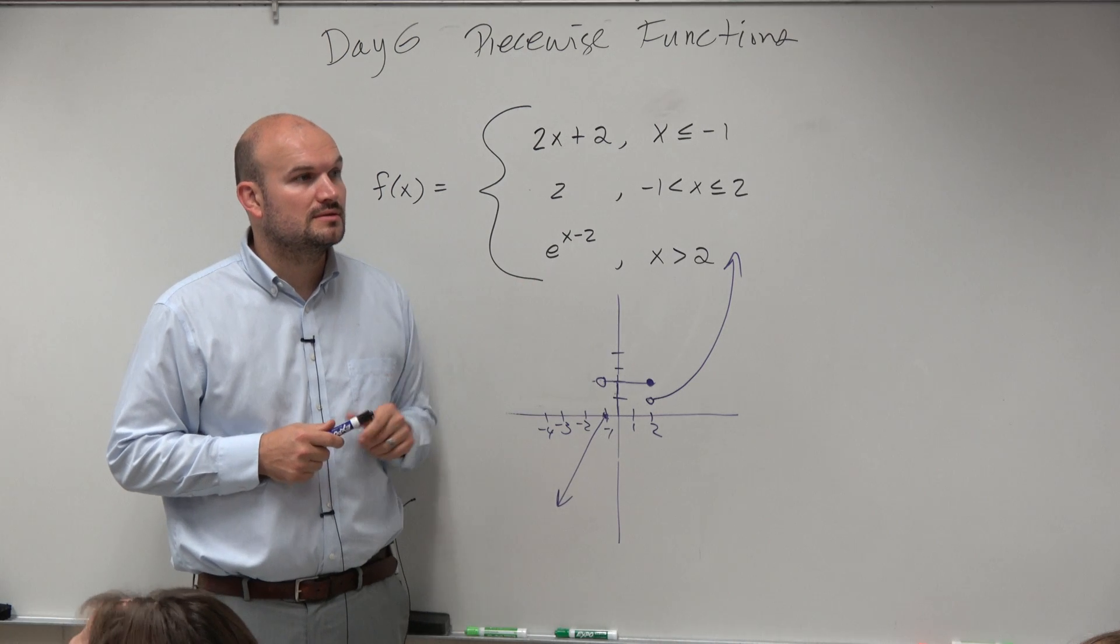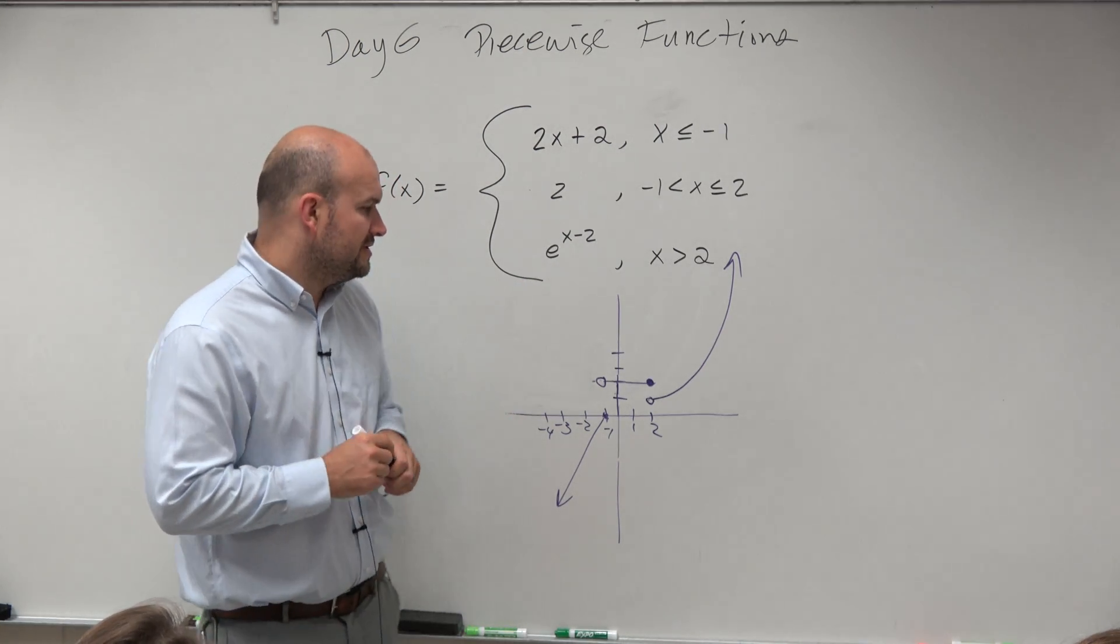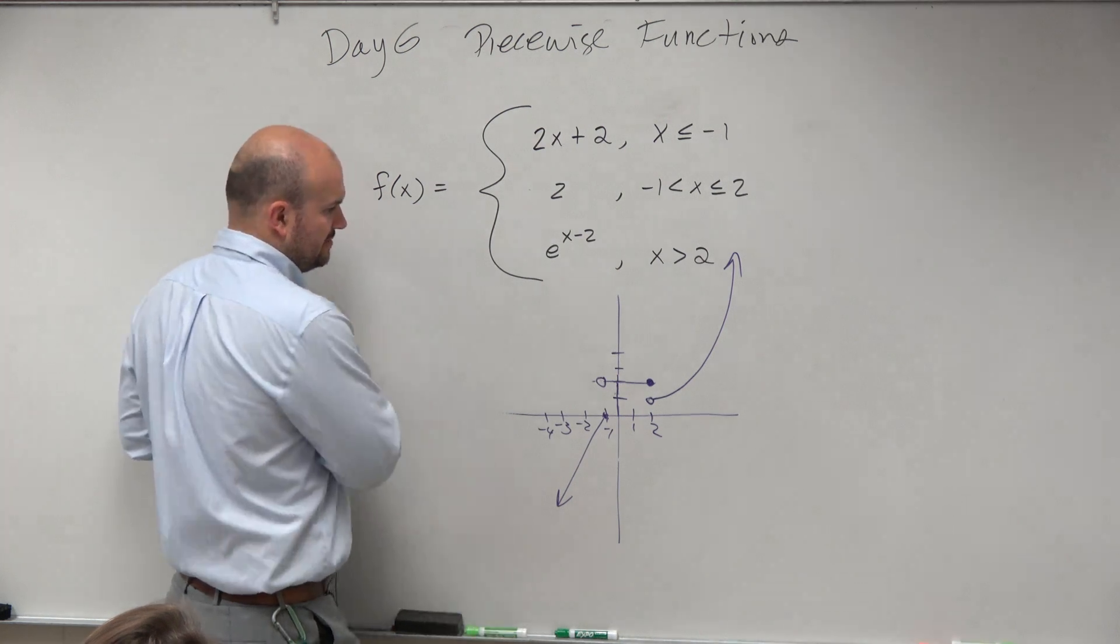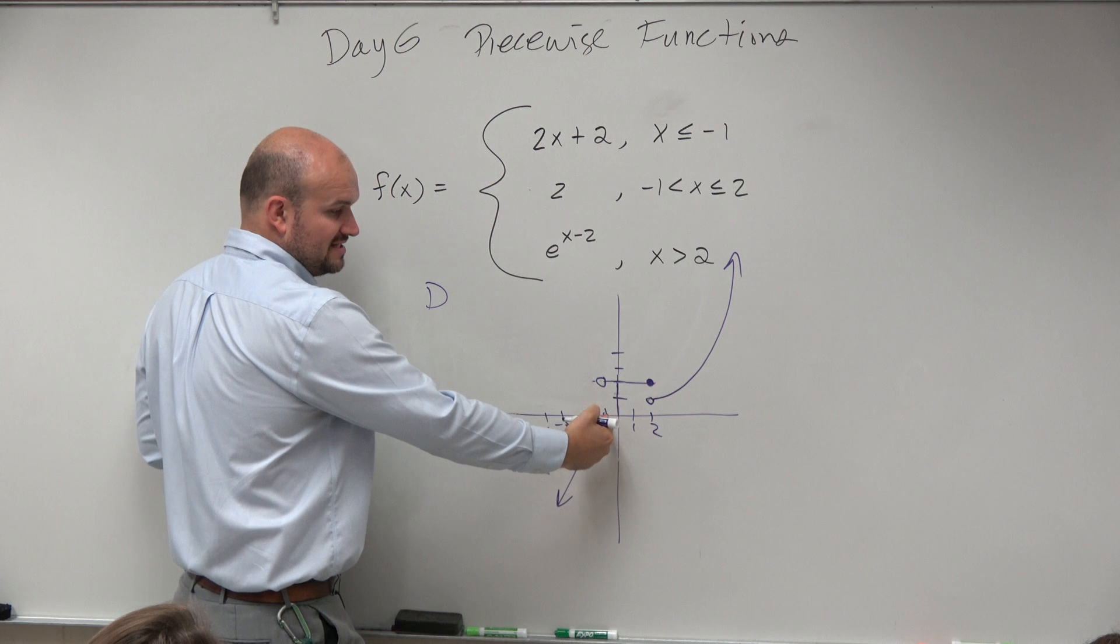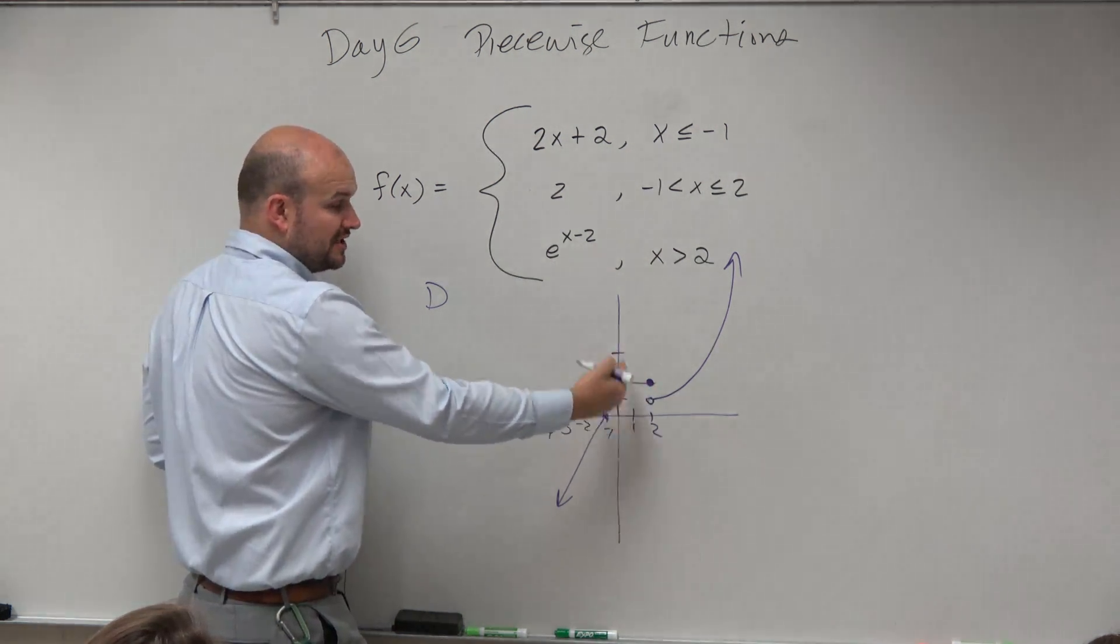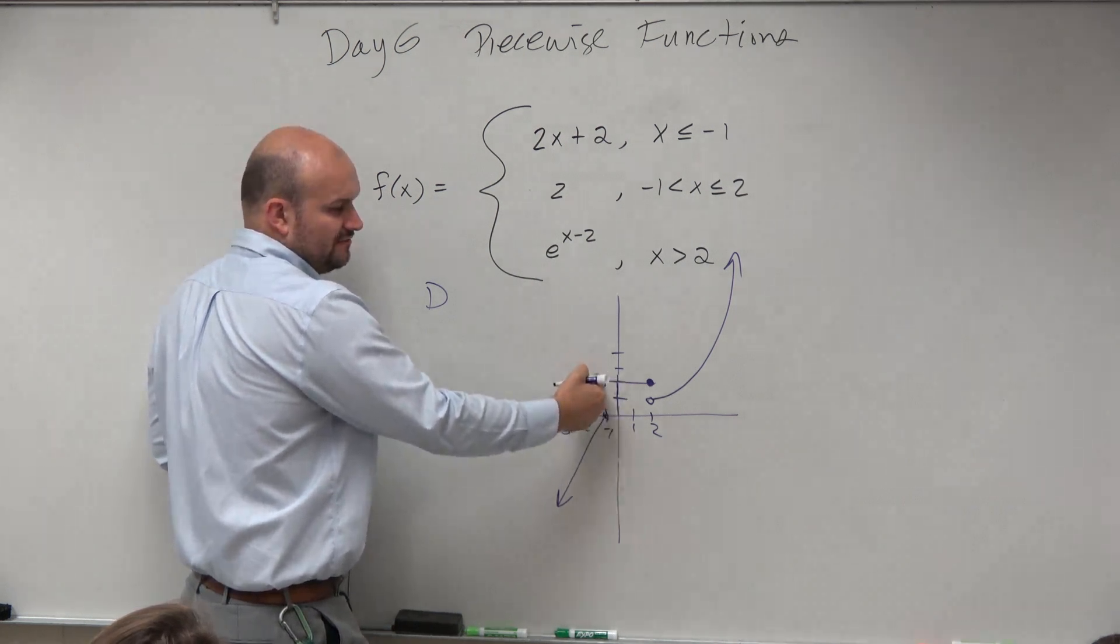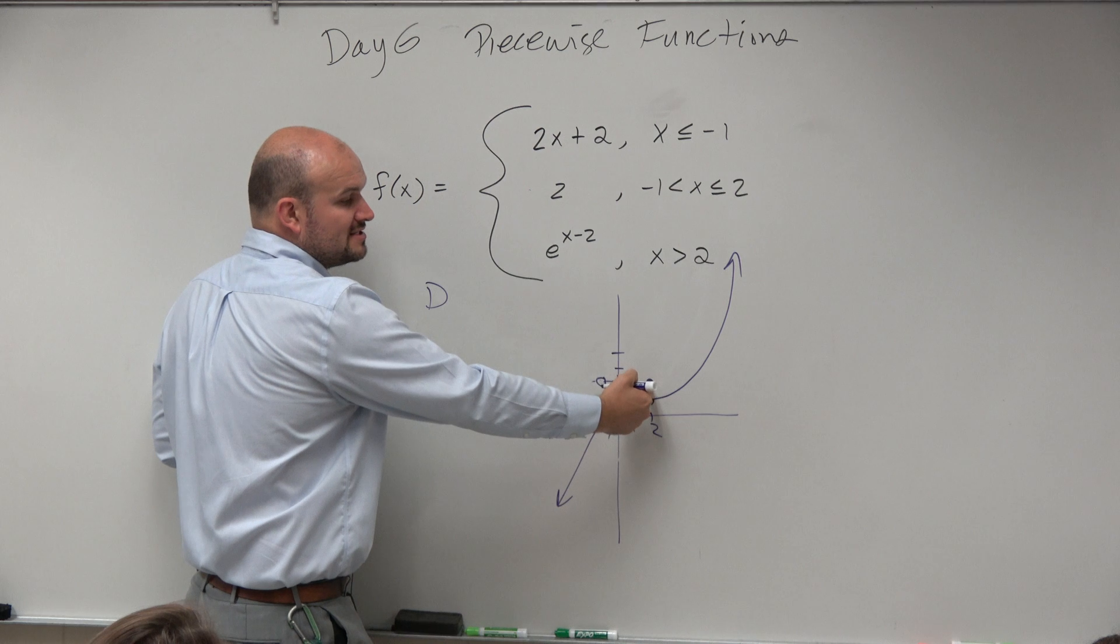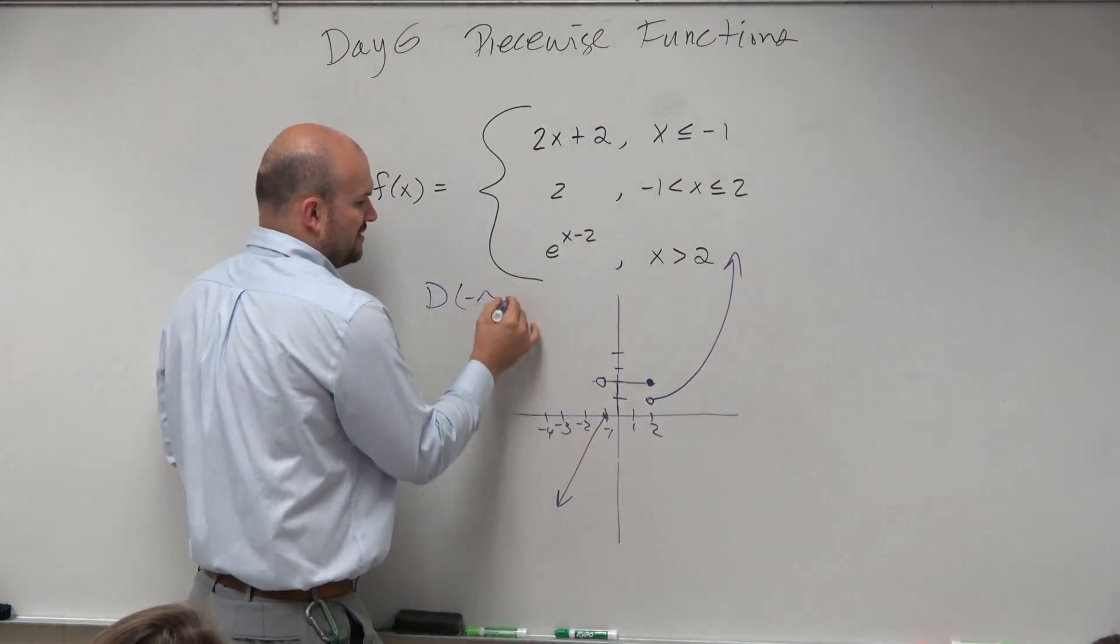Anybody have any questions? So the domain's not that bad because as you go from negative infinity. So negative infinity to negative 1, that's contained. But then we have to jump up to here because these are jump discontinuities. We jump up to here where it's not defined, but that's okay. It's defined there. Then from negative 1 to 2, it's defined. Then we have to jump down here to 2 and then continue it. So the domain is actually negative infinity to infinity.